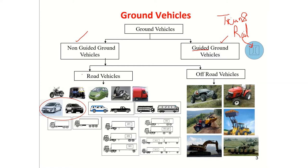Non-guided ground vehicles can be called road vehicles and off-road vehicles. Road vehicles move on well-defined, well-made roads. Off-road vehicles operate on terrain where there are no well-defined roads — they must negotiate all possible terrains. Under road vehicles, we use two-wheelers like motorbikes, three-wheelers like auto-rickshaws, and four-wheeled cars and SUVs, as well as light commercial vehicles and multi-axle vehicles.